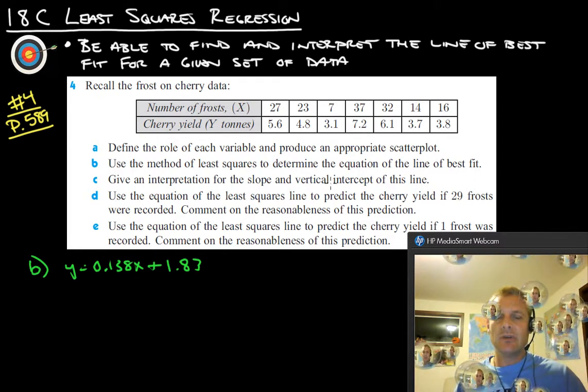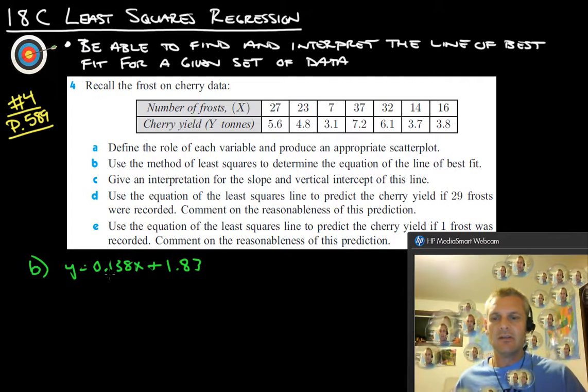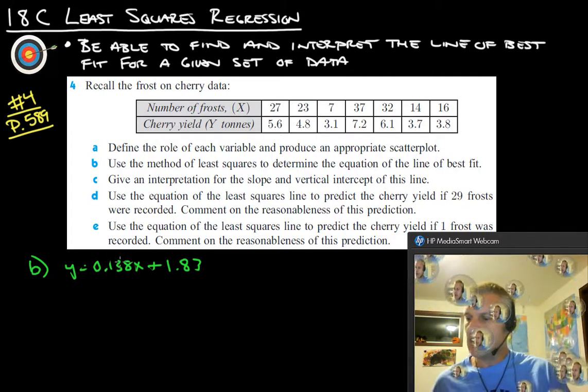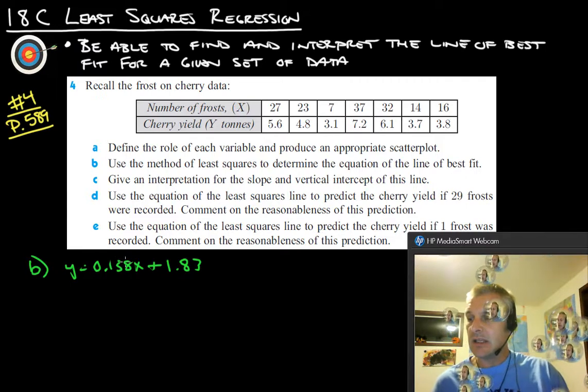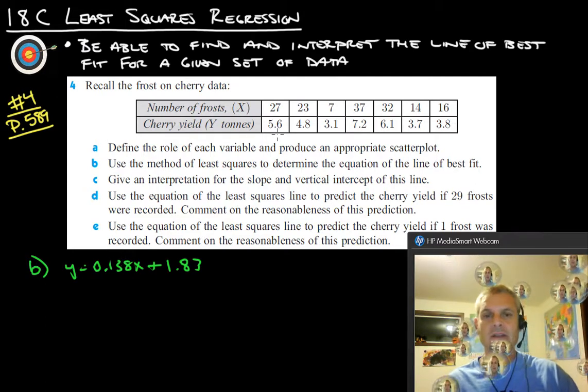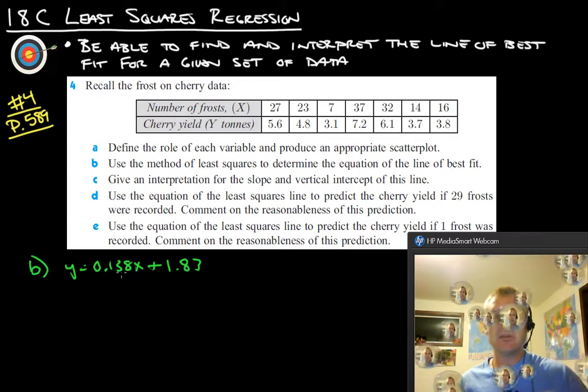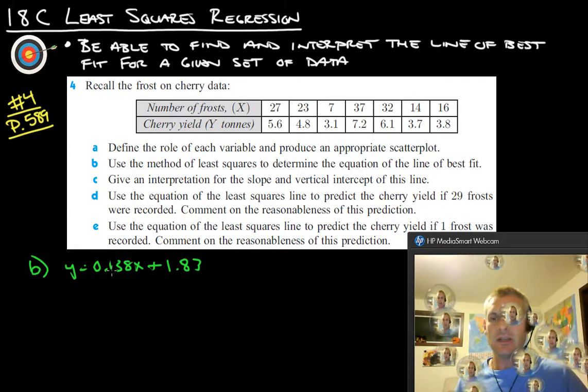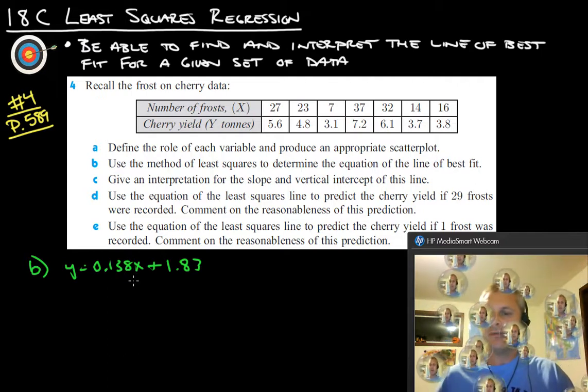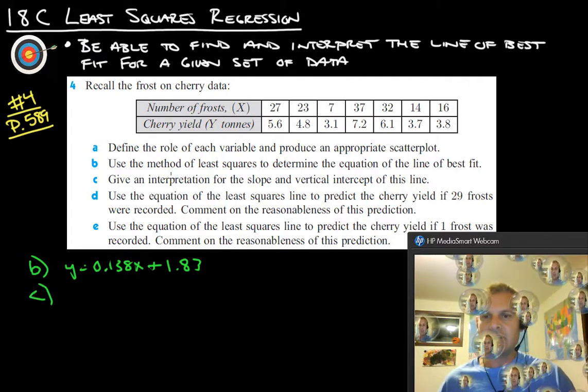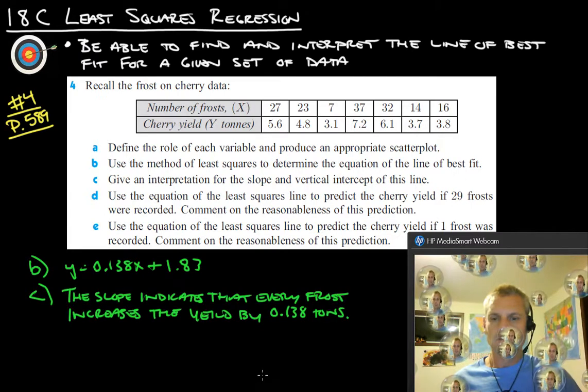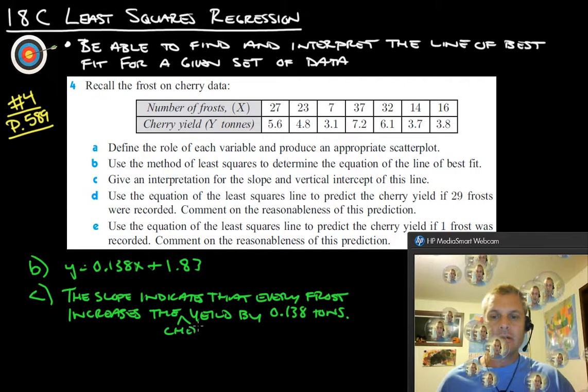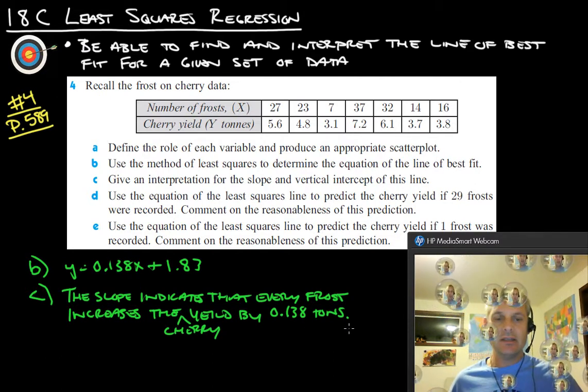So give an interpretation of the slope and the vertical intercept of this line. So the slope is this here. So 0.138X is our slope. So what does the slope mean? So let's go with the slope indicates that every frost increases yield by 0.138 tons. So every time you have one more frost, every frost increases it by 0.138 tons. That's what the slope is. Because again, it's rise over run, right? And so that's the cherry yield, 0.138 more tons for every frost that we have. So the slope indicates that every frost increases the cherry yield by 0.138 tons.